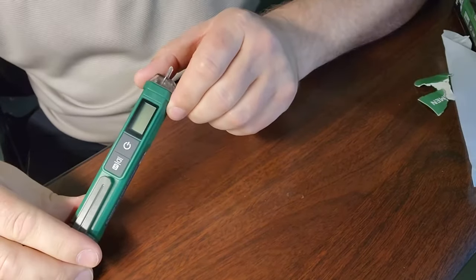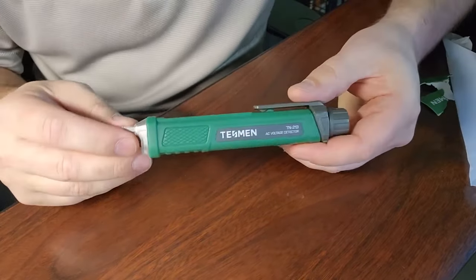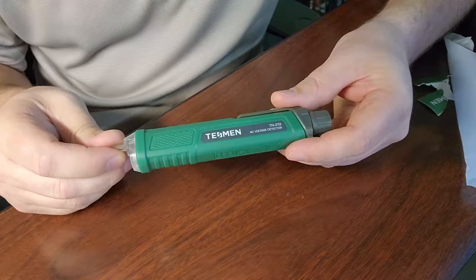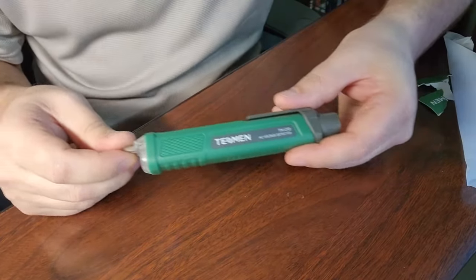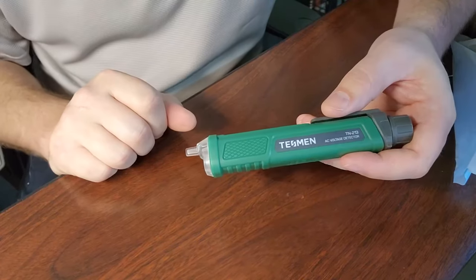All right guys, we'll go ahead and check out. In the video description I'll leave a link for the Amazon, and that's the Tesman TN-213 AC voltage detector non-contact. Good stuff. Thanks for watching, guys.